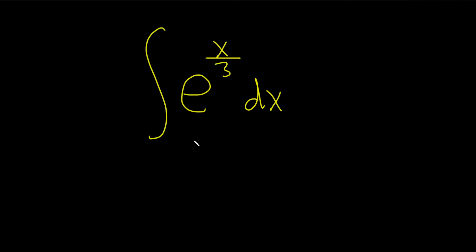Integrate e to the x over 3. So if it was just e to the x, we would get e to the x. But here it's e to the x over 3.